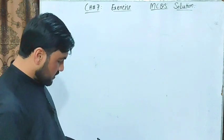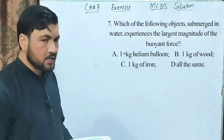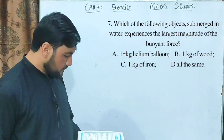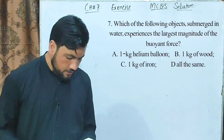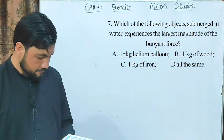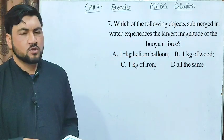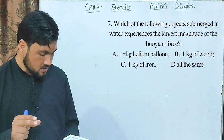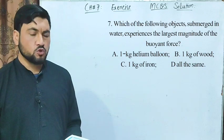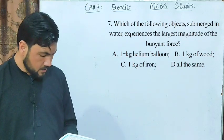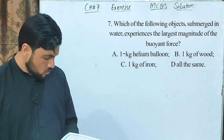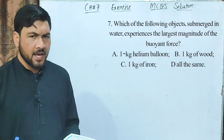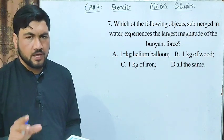MCQ number 7 statement: which of the following objects submerged in water experiences the largest magnitude of buoyant force? Option A: 1 kg of helium balloon. Option B: 1 kg of wood. Option C: 1 kg of iron. Option D: all the same. The correct answer is D — all the same, since buoyant force depends on the volume of fluid displaced, and the question asks about equal masses submerged.